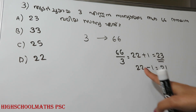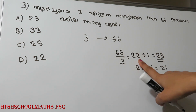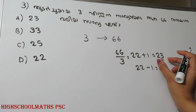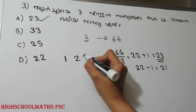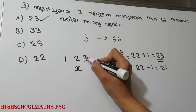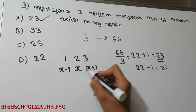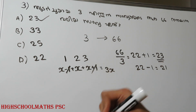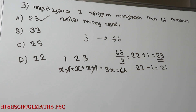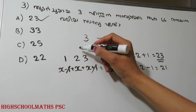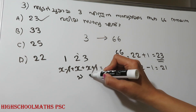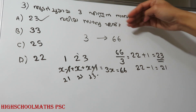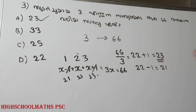If we take the middle number as x, then x minus 1, x, and x plus 1 are the three consecutive numbers. Adding them: x minus 1 plus x plus x plus 1 equals 3x, which equals 66. We divide 66 by 3 to get x equals 22. So x minus 1 is 21. The answer is option A.